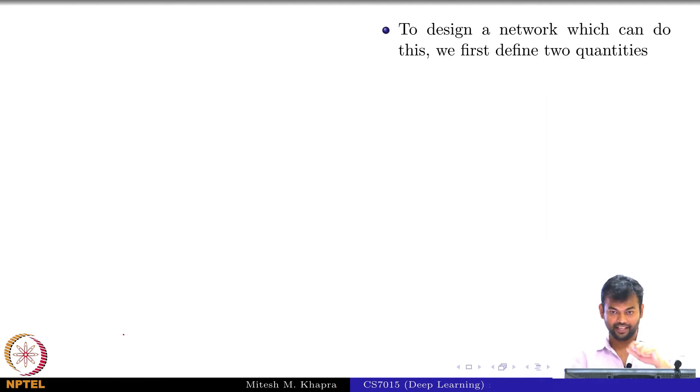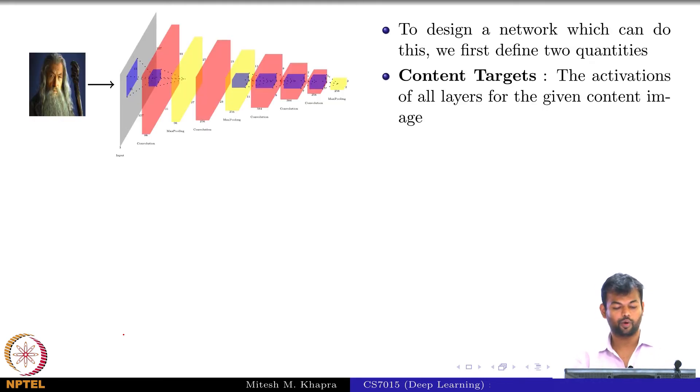To design a network which can do this, we first define two quantities. One is the content targets. I call this image the content image because this is the content you are interested in. I want my final content to look like this.